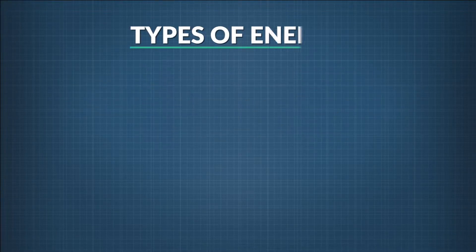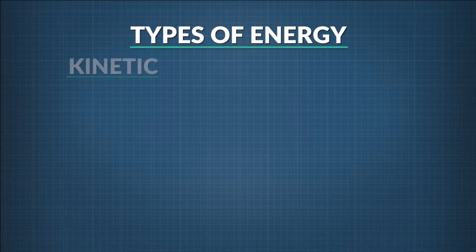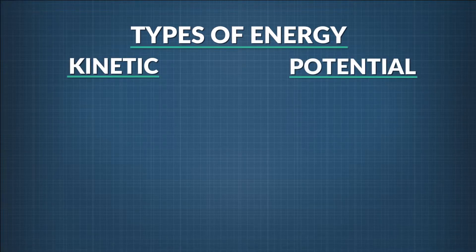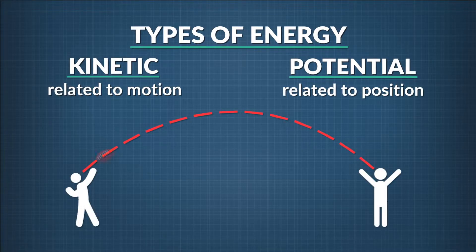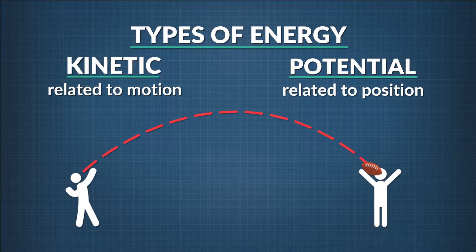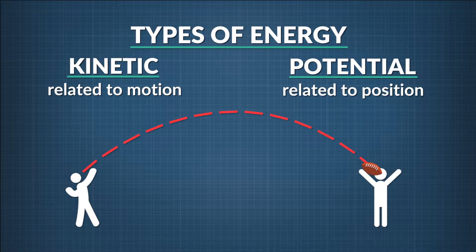We saw earlier that energy can be divided into two types: kinetic and potential. Kinetic energy has to do with an object's motion, and potential energy has to do with its position. Imagine a process that takes place over time — say the flight of a football from when it's thrown to when it's caught. The law of conservation of energy says that the total energy of the football, kinetic plus potential, is constant while the ball is in the air. To see this, we'll need to recall how to calculate energy due to motion and energy due to position.